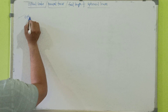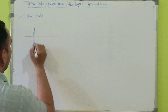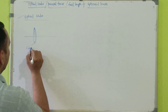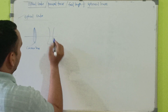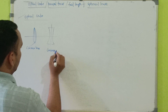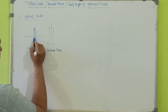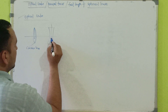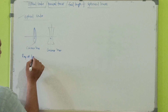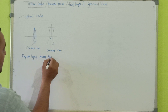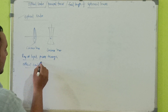Let us look at optical center first. We have two lenses — one is your convex lens and another one is your concave lens. Both are having an optical center. This central point of the lens is called the optical center. If a ray of light passes through the optical center without any deviation,